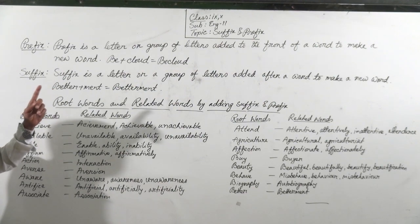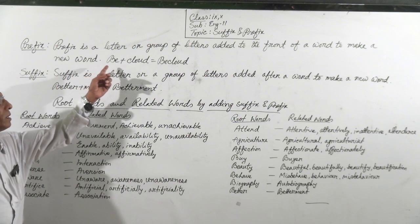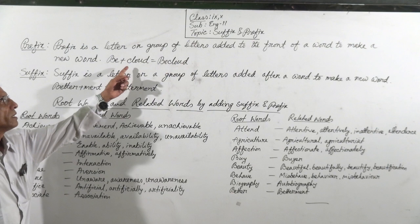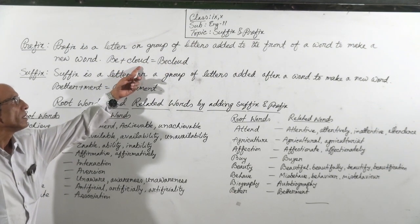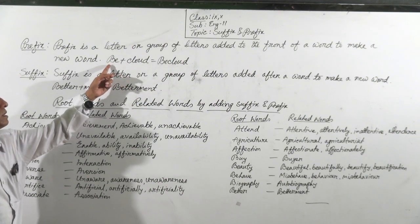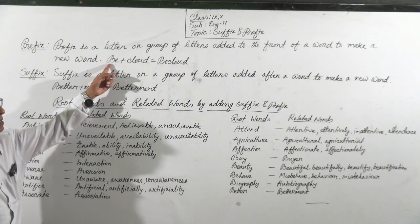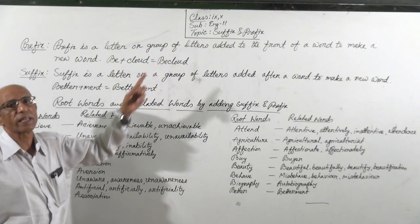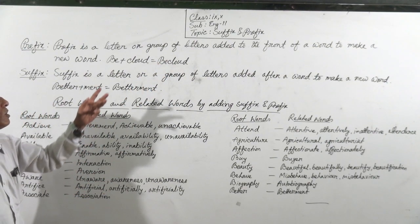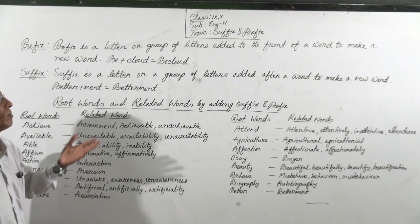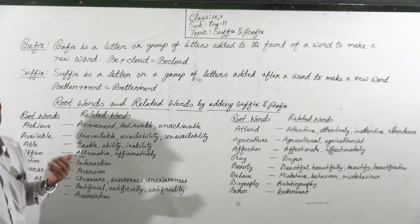I have given one example — follow the example. B plus cloud. Here the root word is cloud, and at the front of the word cloud, B is added. The new word is 'becloud.' So in this way we get new and new words by adding prefix.